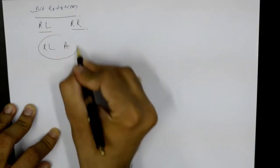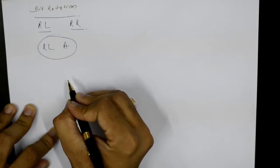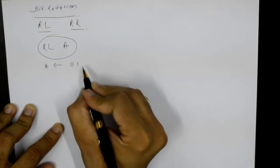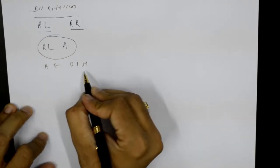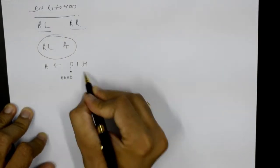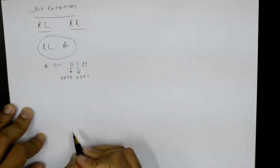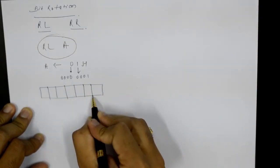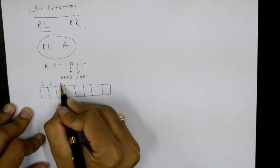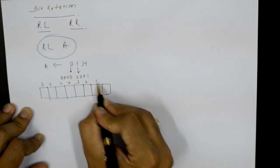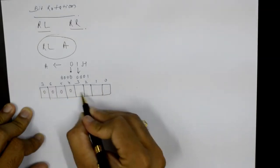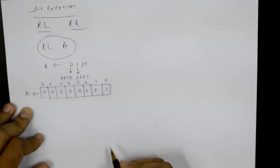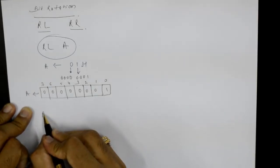RL A means it rotates the contents of the accumulator by one bit on the left side. Let's suppose that A has the value 01H. The zero indicates four zeros and this one indicates 0001, so the accumulator bits from position 7 down to 0 will be: 0 0 0 0 0 0 0 1.